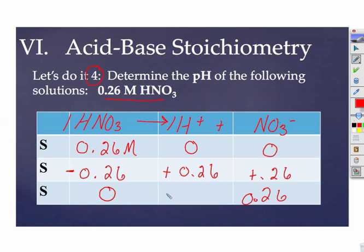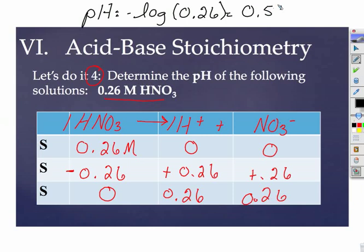That goes to zero. That's by definition what a stoichiometry is. So that's 0.26 molar. We need to calculate the pH. pH is equal to minus the log of our H+. And we'll get 0.59.